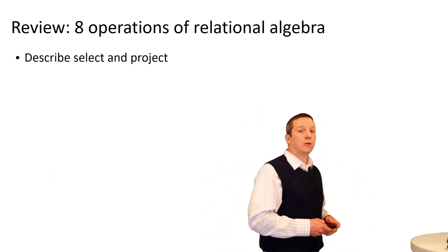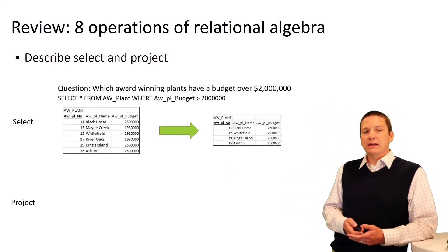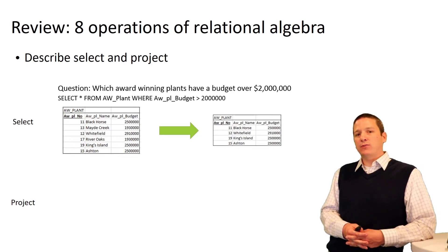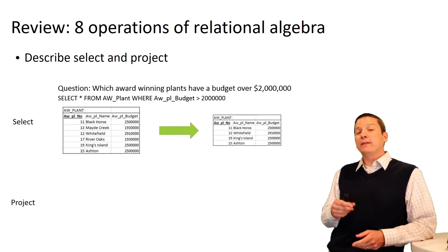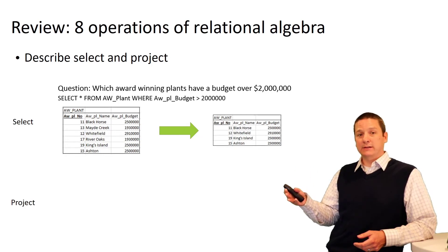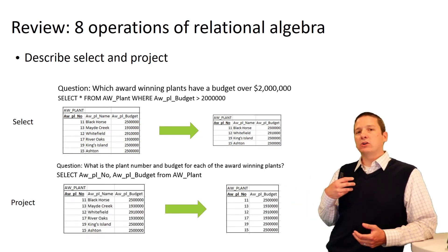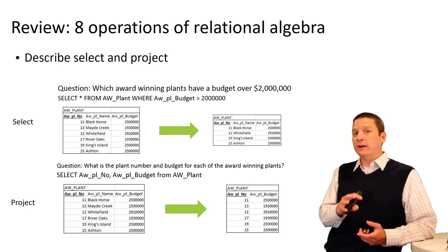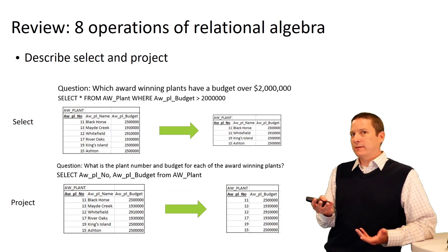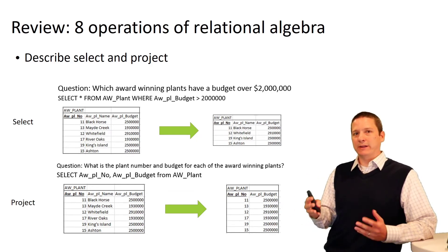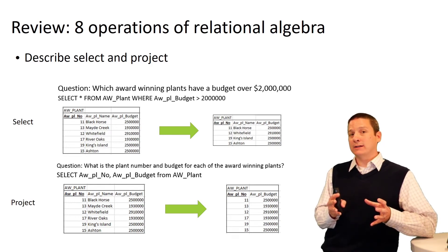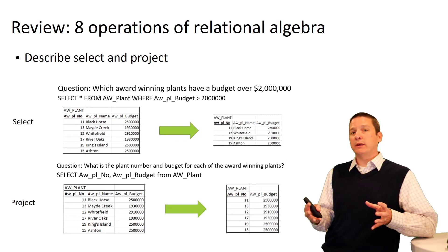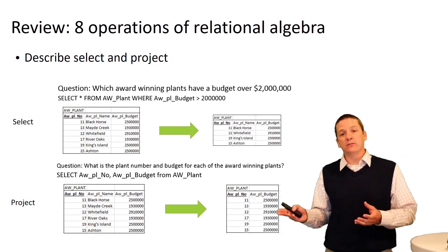We also introduced relational algebra operators: select and project. Select returns a subset of tuples that match some criteria, resulting in a relation with lower cardinality. Project returns a subset of attributes, creating a new in-memory relation with a lower degree. Select and project are two ways to reduce the cardinality and degree of relations — making reports more manageable and showing exactly what we need, nothing more, nothing less — while also reducing the computational complexity of joins going forward.